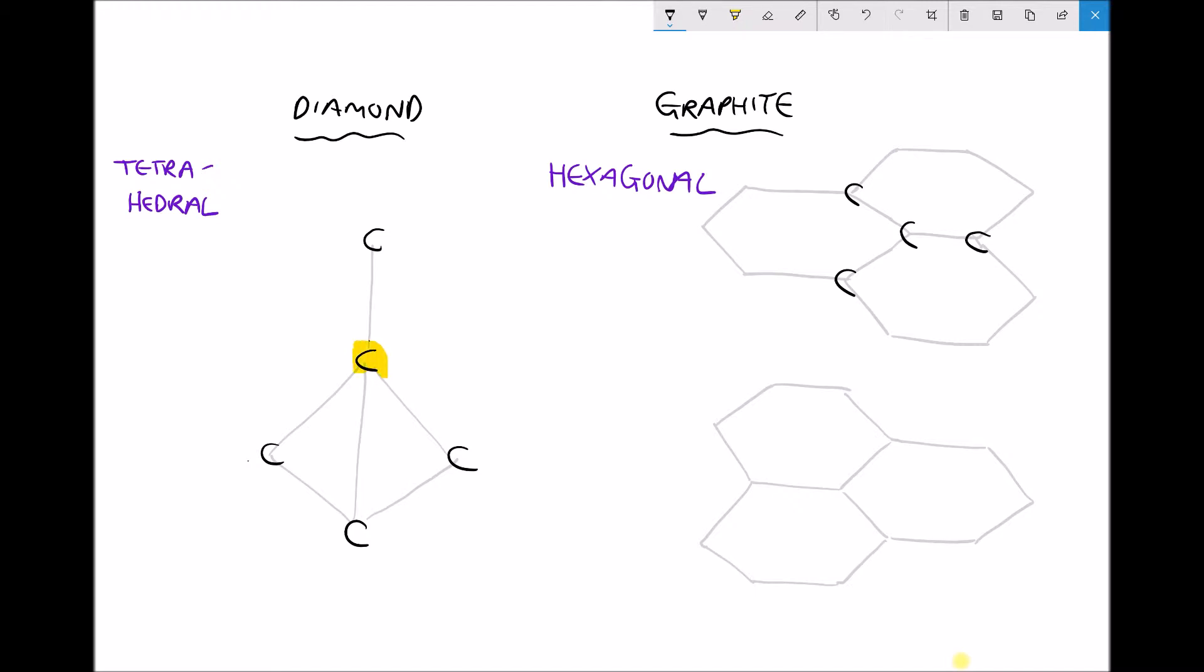Now what we notice when we look at that central atom is that it's actually bonded to four other carbon atoms. Now we know that carbon has four electrons in its outer shell but it doesn't want to give those electrons up. Instead what it wants to do is share each electron with a neighbouring carbon. So in this bond here each of the carbons contributes an electron. In this bond here each of the carbons contributes an electron and so on around that structure.